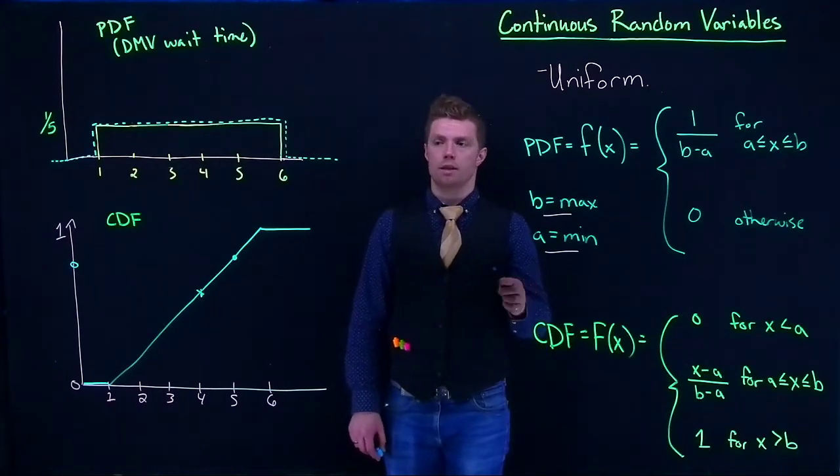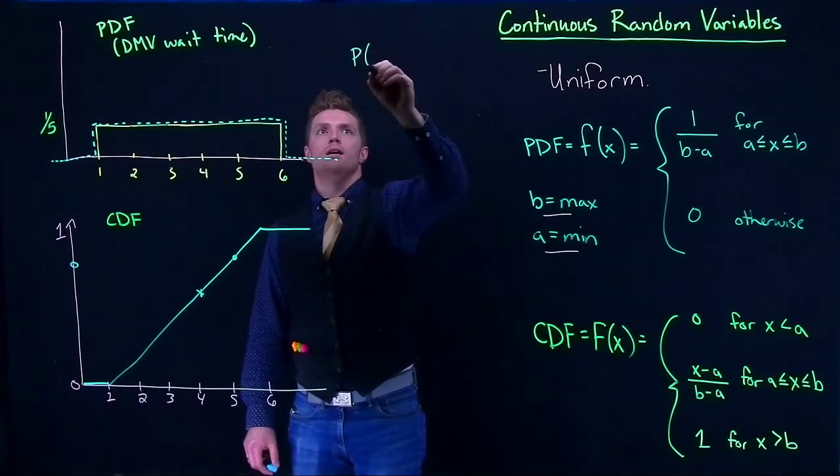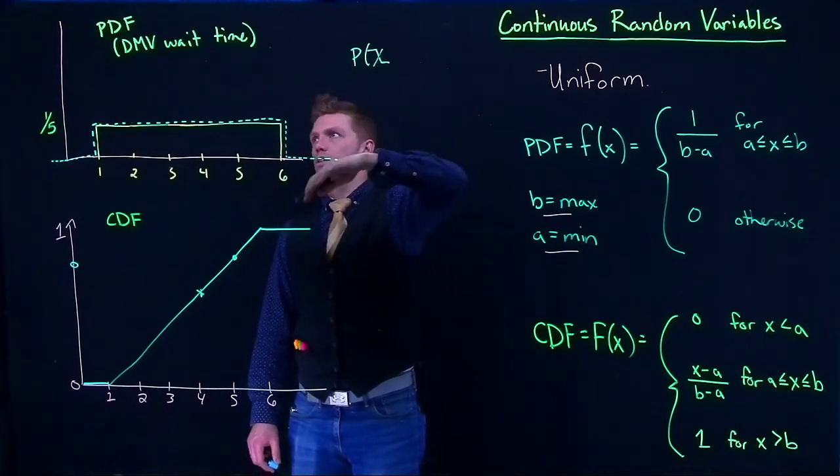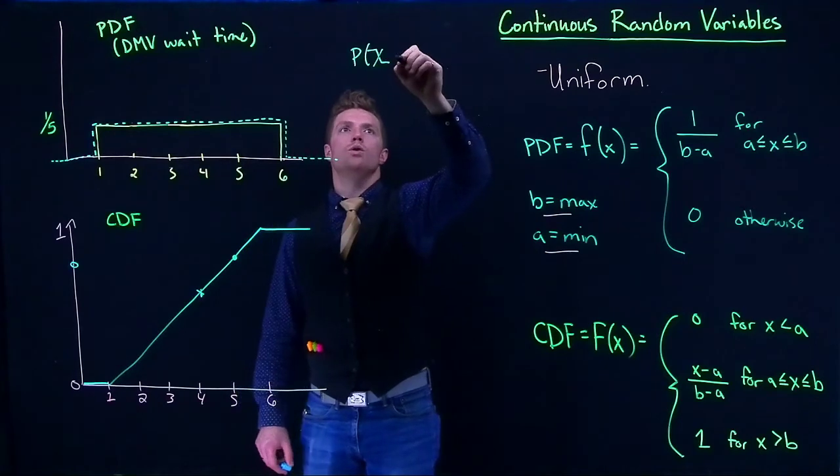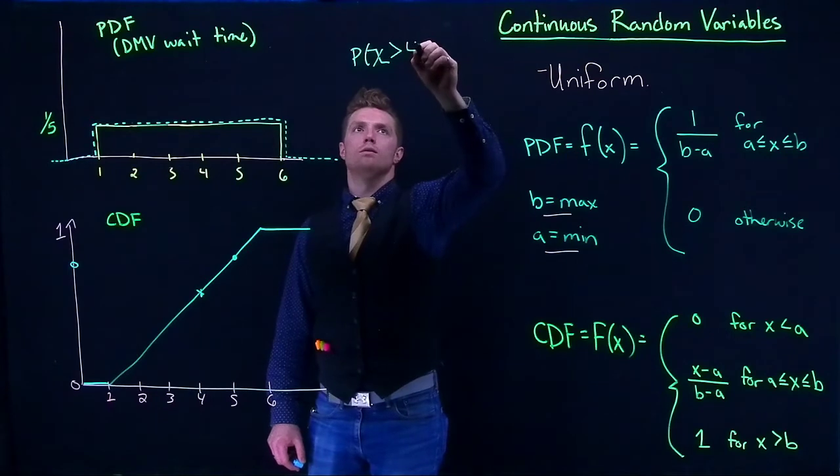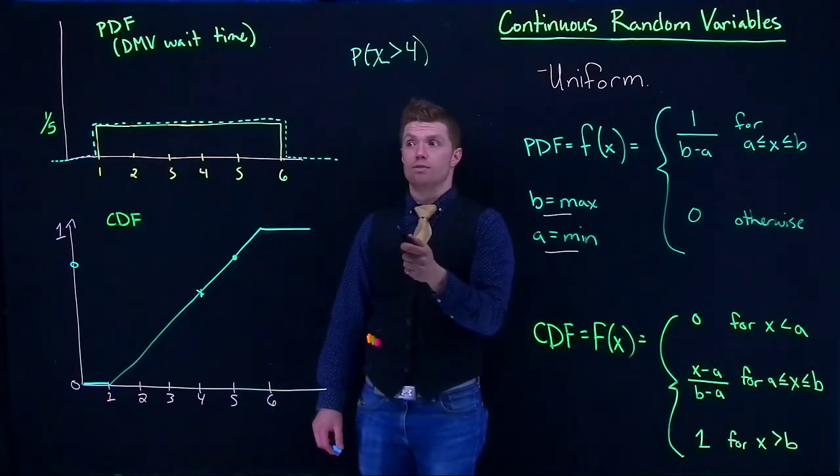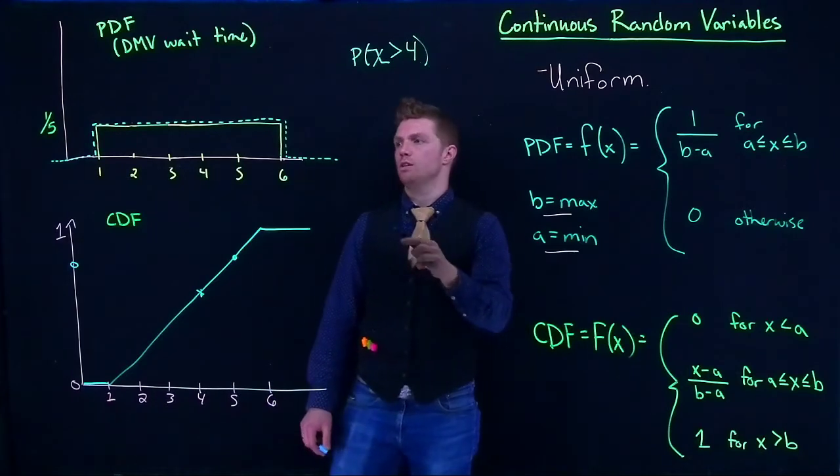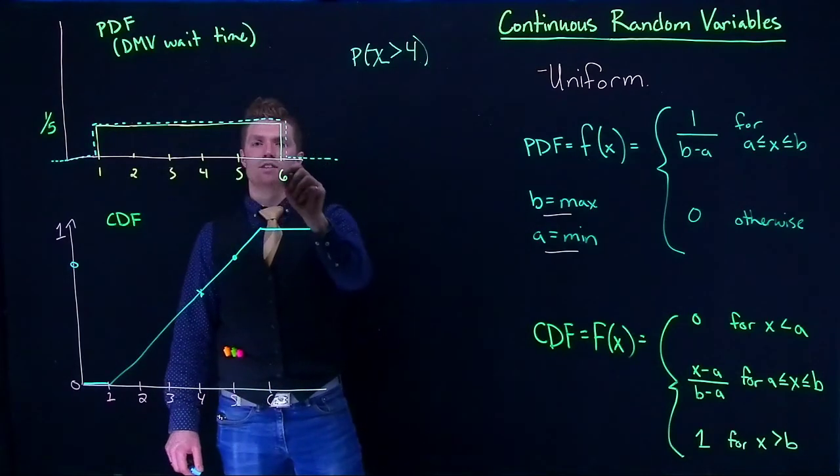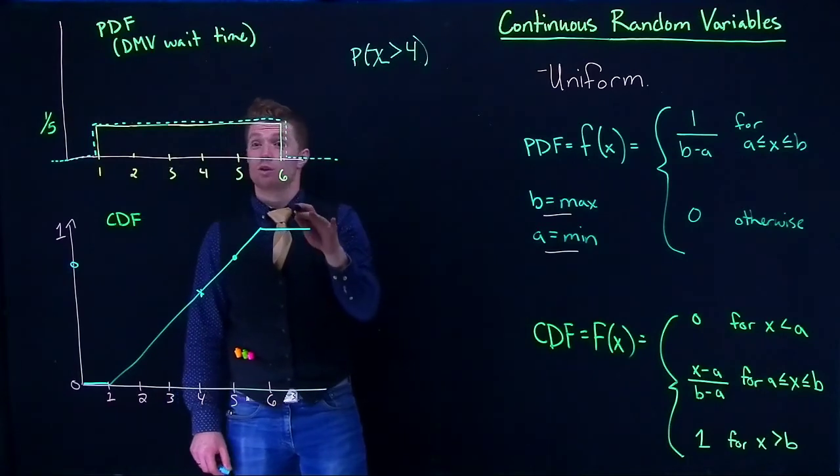So the CDF is extraordinarily useful. Now let's say that I want to know what's the probability of our random event, so this is our DMV wait times, is going to be greater than four. With our PDF, since it's uniform, it's super easy. We just go four, five, and six for the event being greater than four. We circle it and we know it's going to be two-fifths.